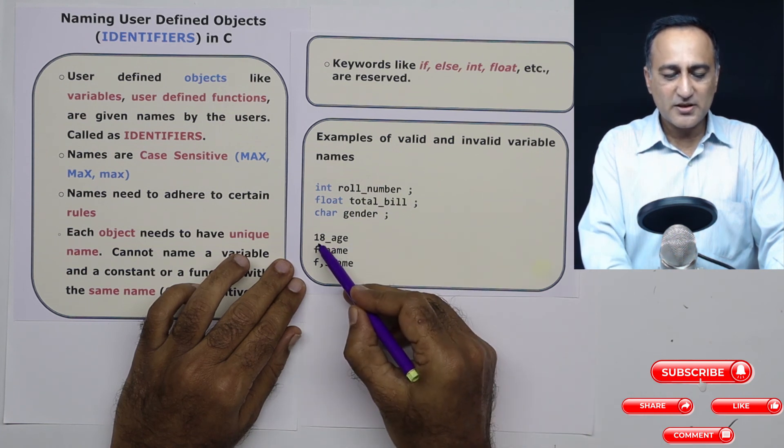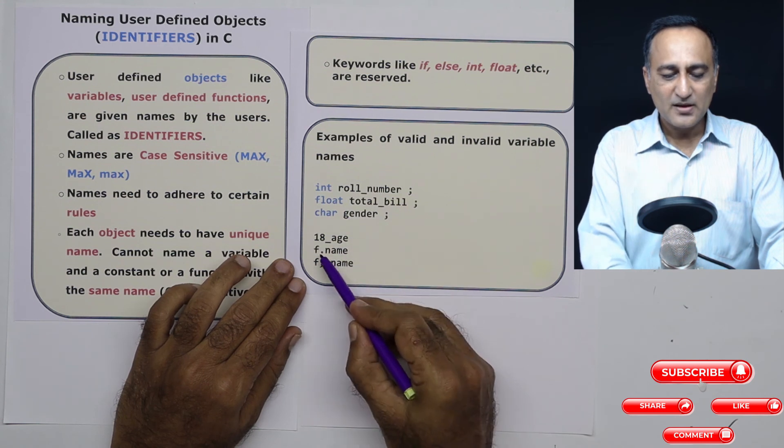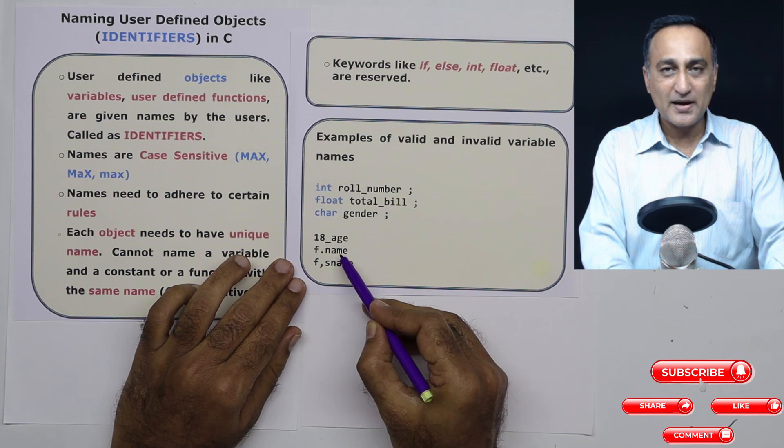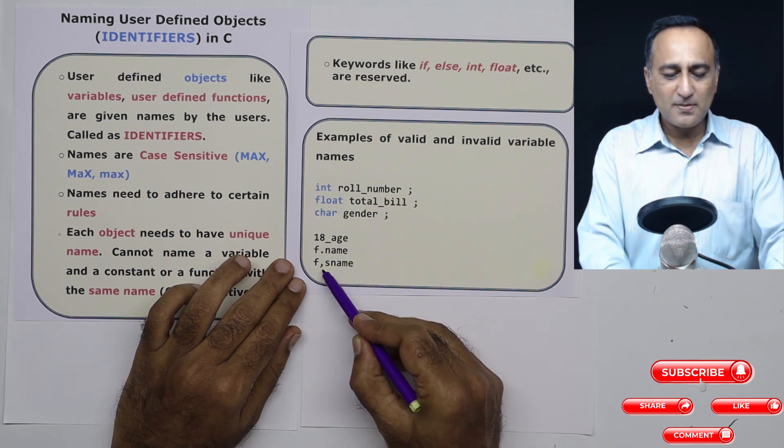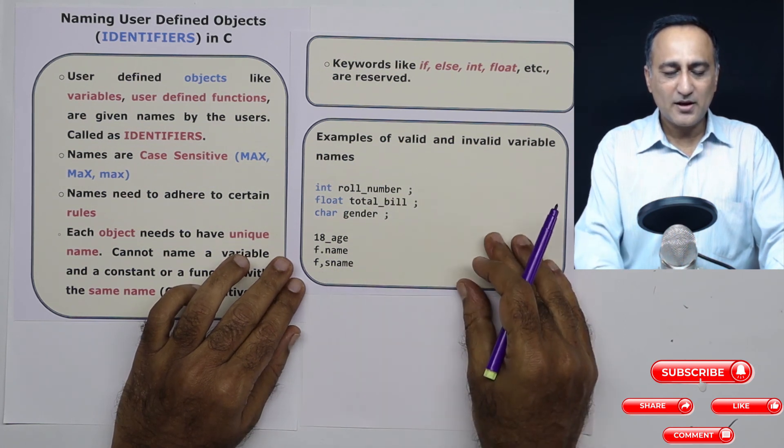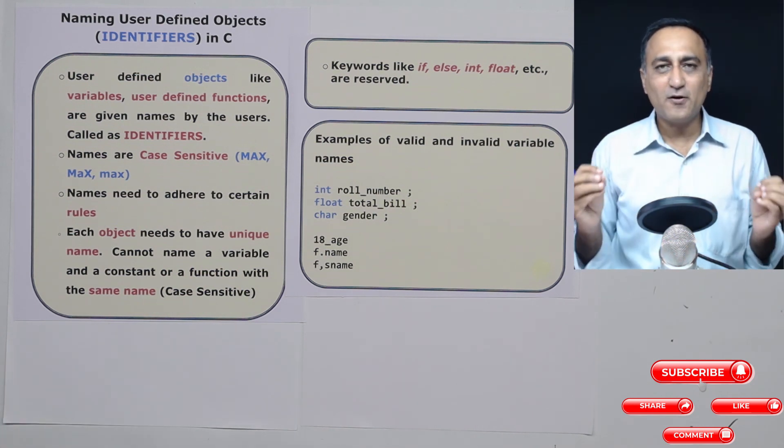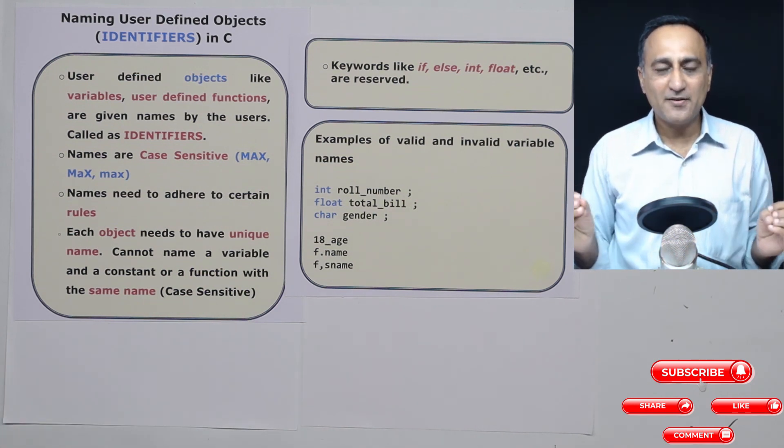This is not good, because you have started it with the number. You're supposed to start it with some alphabet. This is again not okay, because there is a dot after the F, although some languages allow this. This is again bad, because there's a comma after the F. So just run through these slides and get a feel of how you should name identifiers.